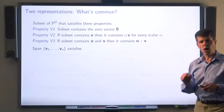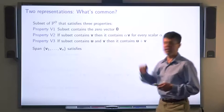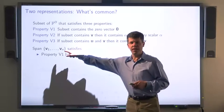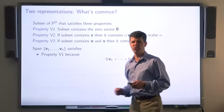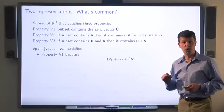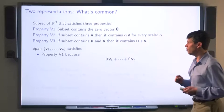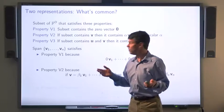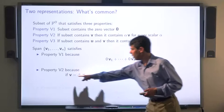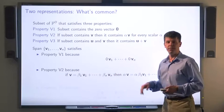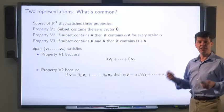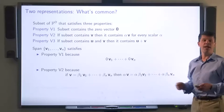Let's see why the span of a collection of vectors satisfies these three properties. The span of vectors v1 through vn is the set of all linear combinations of those vectors. Setting every coefficient to zero gives the zero vector, so property V1 is satisfied. For property V2: any vector in the span is a linear combination of v1 through vn, and for any scalar alpha, the product alpha·v can also be written as a linear combination by multiplying all coefficients by alpha.